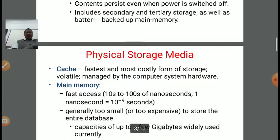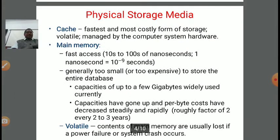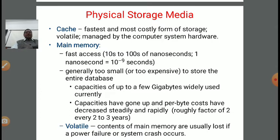In physical storage media, first we discuss cache. Cache is the fastest and most costly form of storage. It is volatile — meaning temporary. Whenever anything is written in cache, as and when the power is switched off, the content will automatically be lost. In order to maintain the data, we need to regularly save it explicitly. Cache is managed by the computer system hardware.